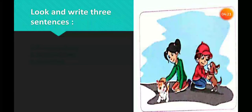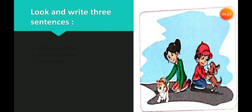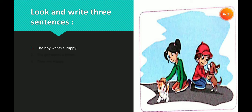Now, look and write three sentences, please. For example, I can say: The boy wants a puppy. The girl wants a kitten. And they are happy.